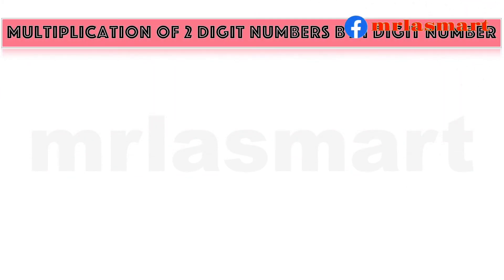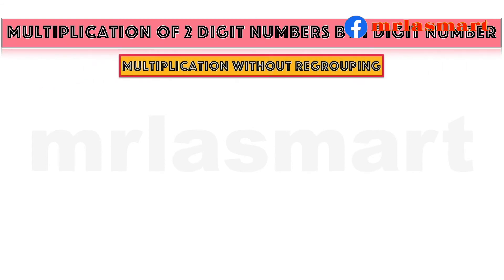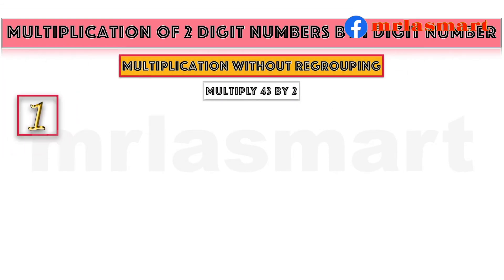Multiplication of two-digit numbers by one-digit number. Multiplication without regrouping. Multiply 43 by 2.